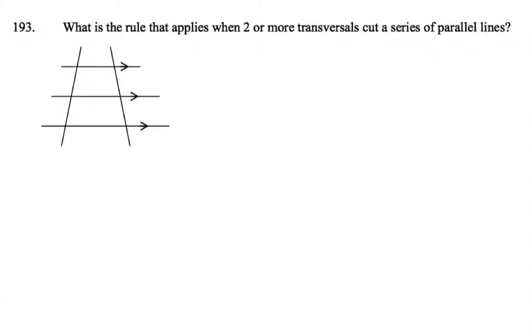Here we have a situation when we have two or more parallel lines cut by two or more transversals. These are the parallel lines, the ones with the arrows on them, and these are what we call the transversals. They're lines that cut through parallel lines, and there's a special rule that applies when this situation occurs.